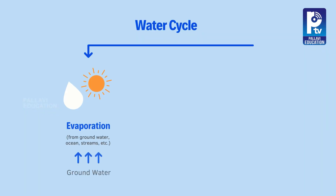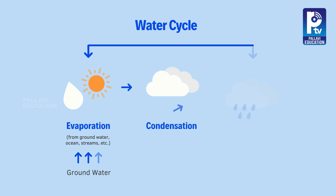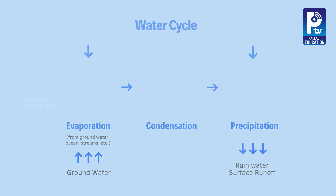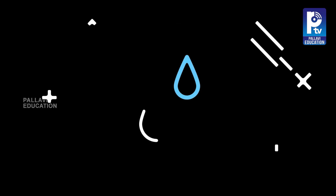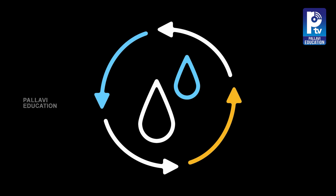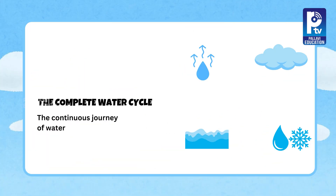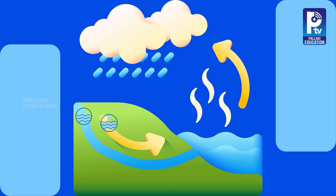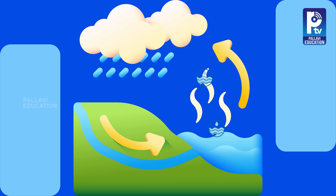So, evaporation sends water up, condensation forms clouds, and precipitation brings the water back down. This amazing cycle repeats every day, quietly working above us. The water cycle is the continuous journey of water through evaporation, condensation, precipitation, and collection. It keeps water moving all around us — in the air, on land, and in oceans.